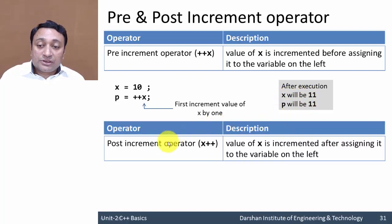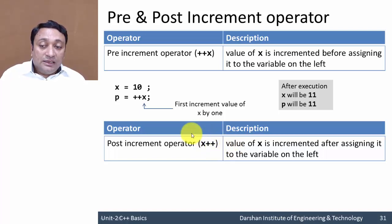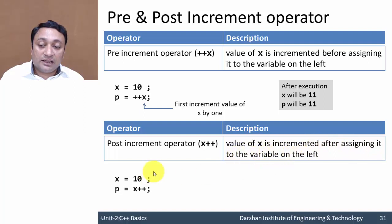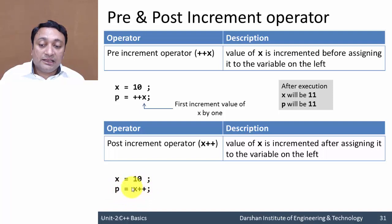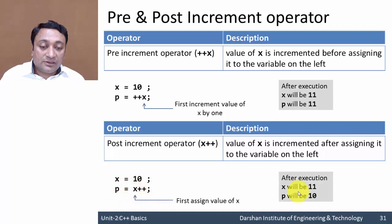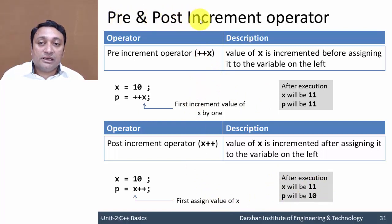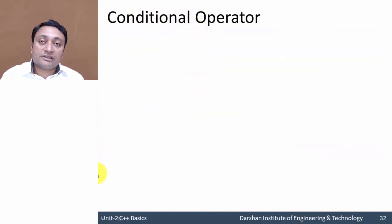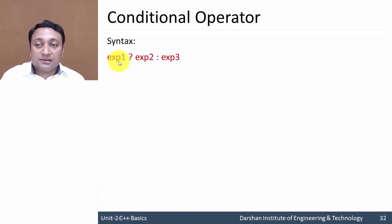In the post-increment operator, the operator symbol is written after the identifier — the postfix form. The value of x is incremented after assigning it to the variable on its left. So first x (which is 10) is assigned to p, and then x is incremented to 11. After execution, x will be 11 and p will be 10. This behavior is also applicable to pre and post decrement operators.